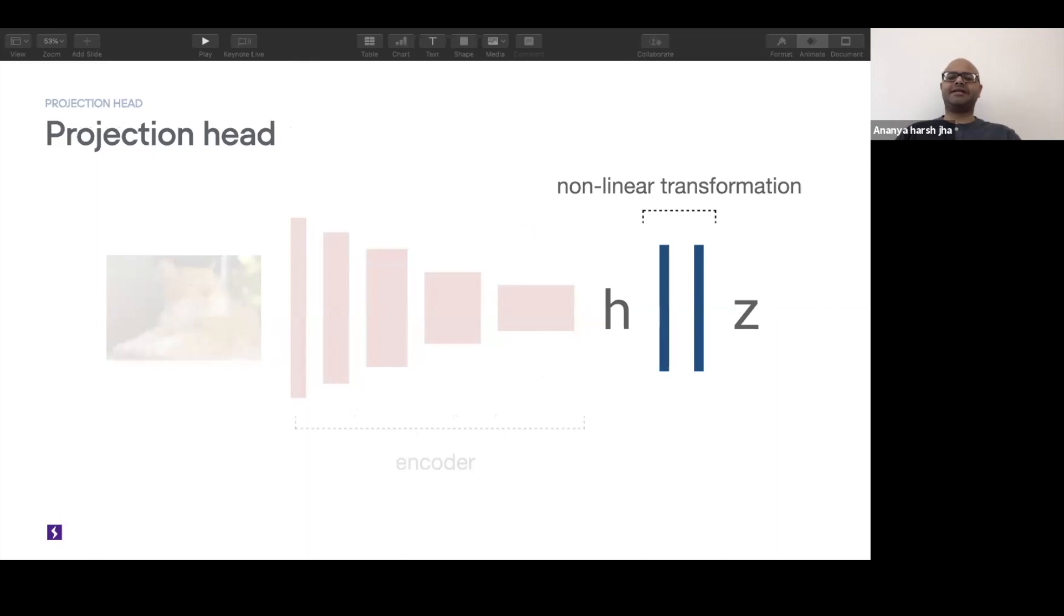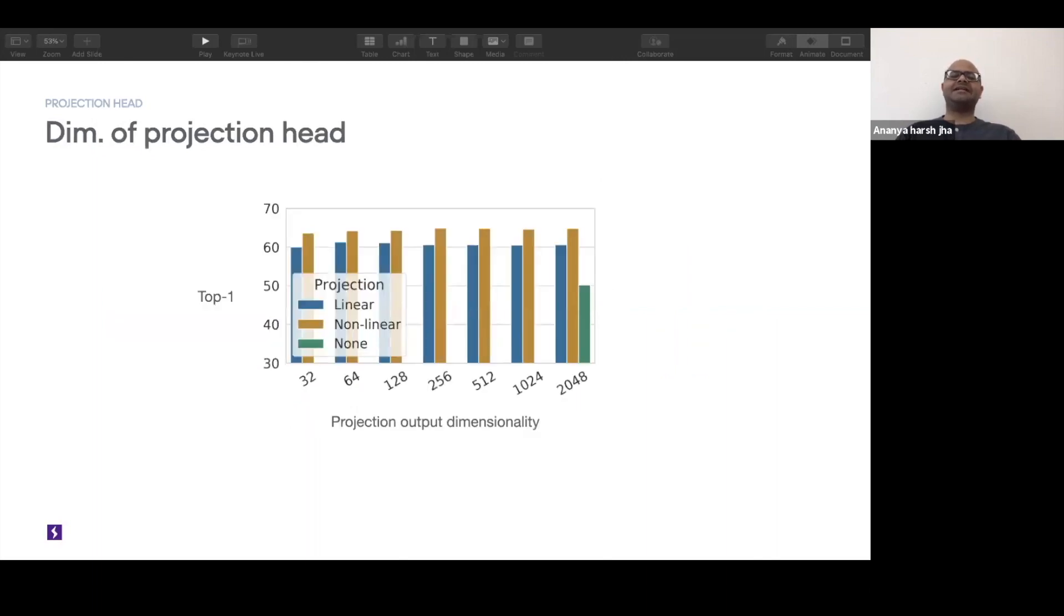Speaking of z now, the dimensionality of z itself doesn't matter when you are doing an ablation across this. What does matter is that you have a nonlinear projection head, because the linear projection head strictly underperforms in comparison to that.